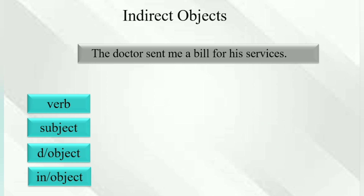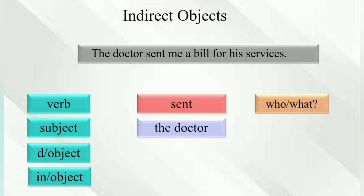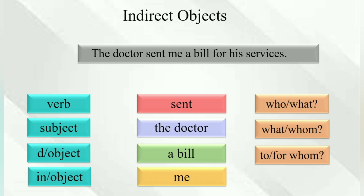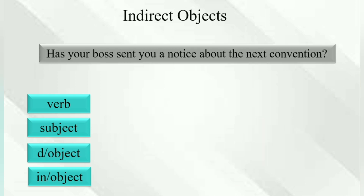'The doctor sent me a bill for his services.' Verb: sent. Who sent? The doctor. The doctor sent what? A bill. The doctor sent a bill for whom? For me. So 'me' is the indirect object.